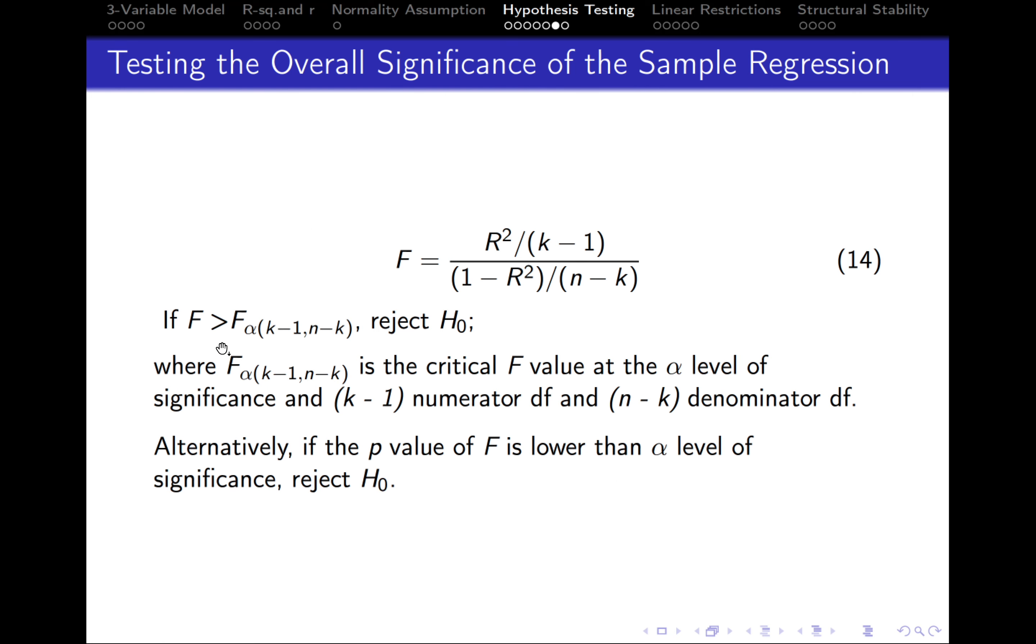When it comes to the critical f statistic, there is an f distribution table that I will share with you in the files. But the way it should be approached is the following. So alpha, this is the level of significance, let's say five percent, the traditional one.